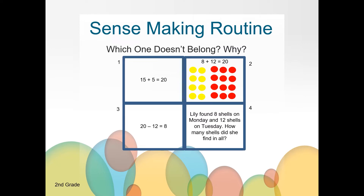Number one doesn't belong because the other ones are related facts. Number two doesn't belong because it's the only one that has pictures. Number three doesn't belong because it's the only one that represents subtraction. Number four doesn't belong because it's a number problem instead of a number sentence. What other ideas did you think of? Can you write those down on your piece of paper?